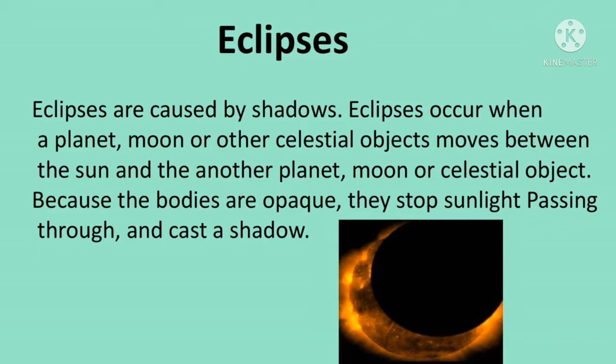During a lunar eclipse, Earth gets in the way of the sun's light hitting the moon. During the night, a full moon fades away as Earth's shadow covers it up. The moon can also look reddish because Earth's atmosphere absorbs the other colors while bending some sunlight toward the moon. This sunlight bending through the atmosphere is also why sunsets are orange and red. During a total lunar eclipse, the moon is shining from all the sunrises and sunsets occurring on Earth.